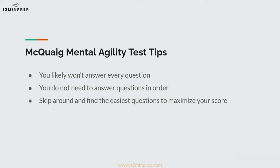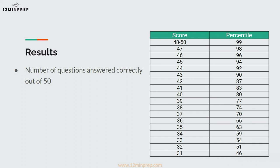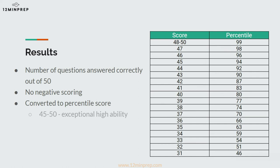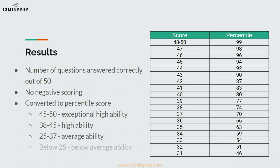Your score is determined based on the number of questions you answered correctly out of 50. You do not lose points for getting a question wrong. For example, if you got 30 questions right, your score would be a 30, regardless of how many others you got wrong or skipped. This score is then converted into a percentile score, which tells you how you performed relative to other candidates. Scores of 45–50 correct answers indicate exceptional high ability; 38–45 is high ability; 25–37 is average ability; and below 25 is below average ability. The table on the right breaks down what scores correlate with specific percentile scores.